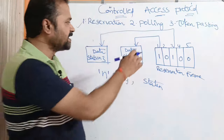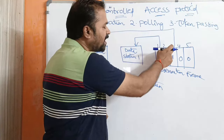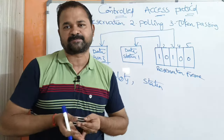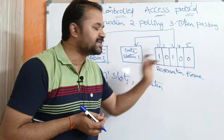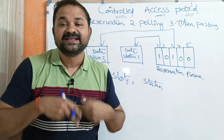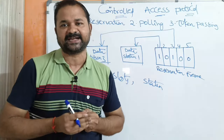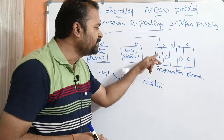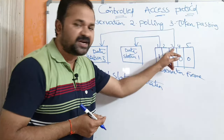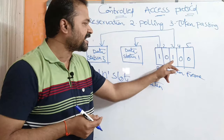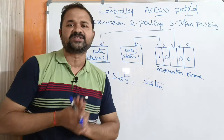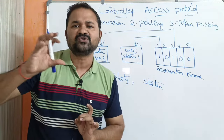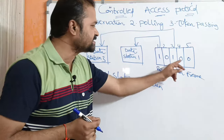Here the first station and third station want to transmit frames. So these two stations need to make a reservation before transmitting the data. Station one transmits a one bit in the first slot, and station three transmits a one bit in the third slot. Stations two, four, and five don't want to send any frames, so their slots are zero.